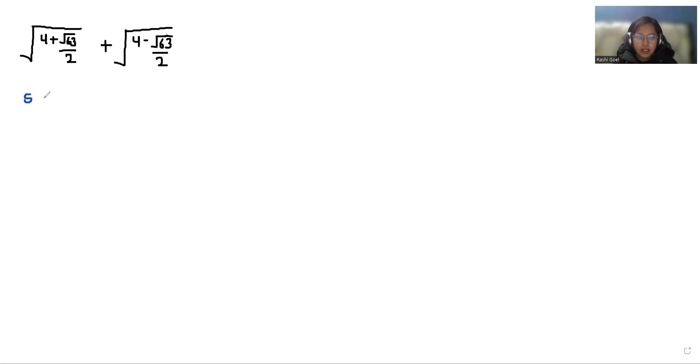s. So s equals √(4 + √63/2) + √(4 - √63/2). Now I'm doing squaring both sides.